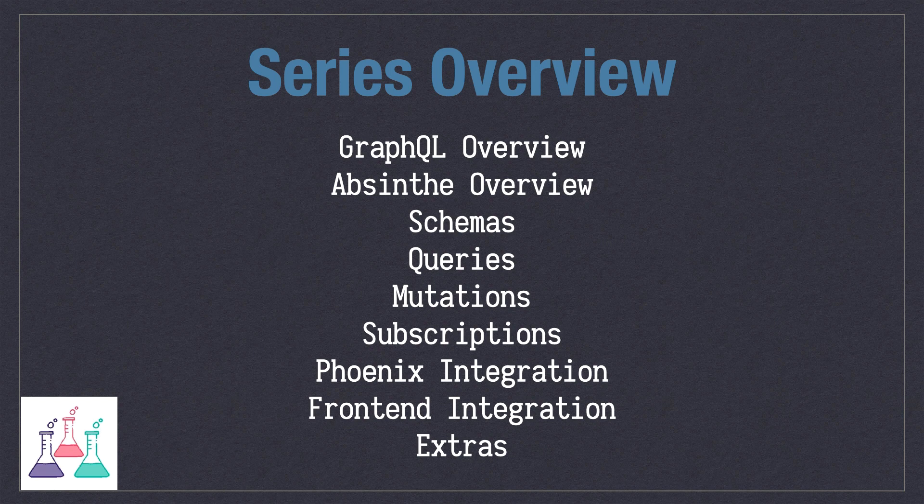Then I'll cover schemas, queries for getting information from an API, mutations for creating or updating items, subscriptions, and how to integrate your GraphQL API with the Phoenix app — and this will include auth.